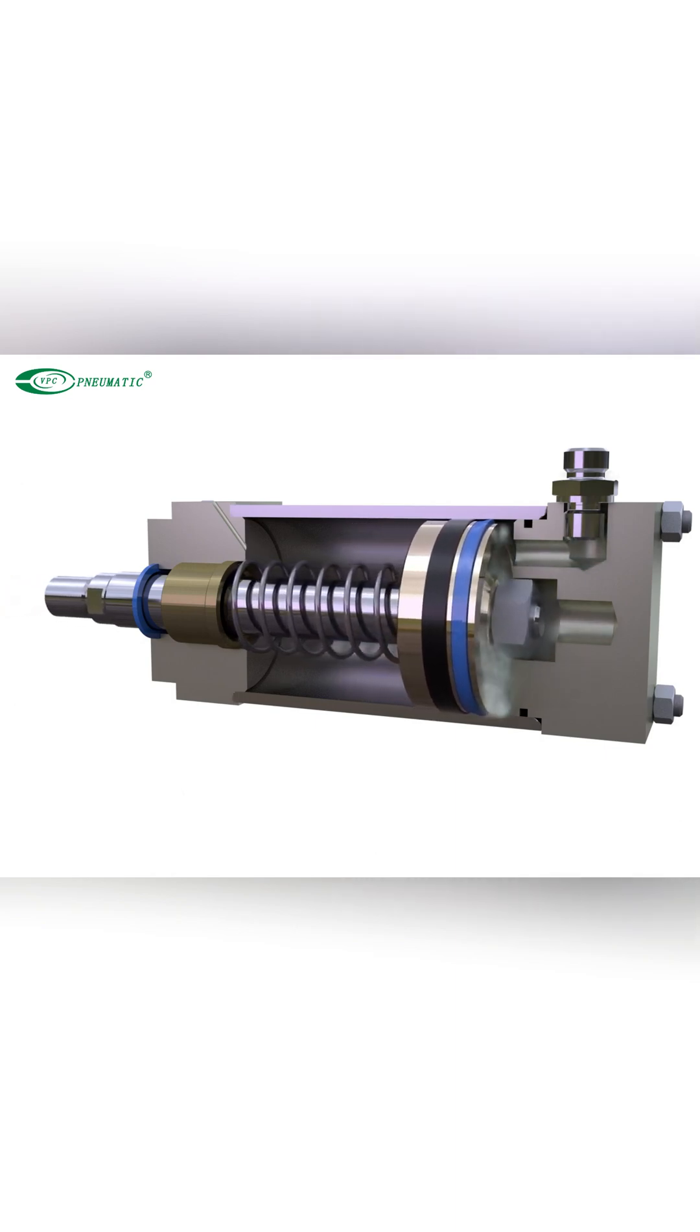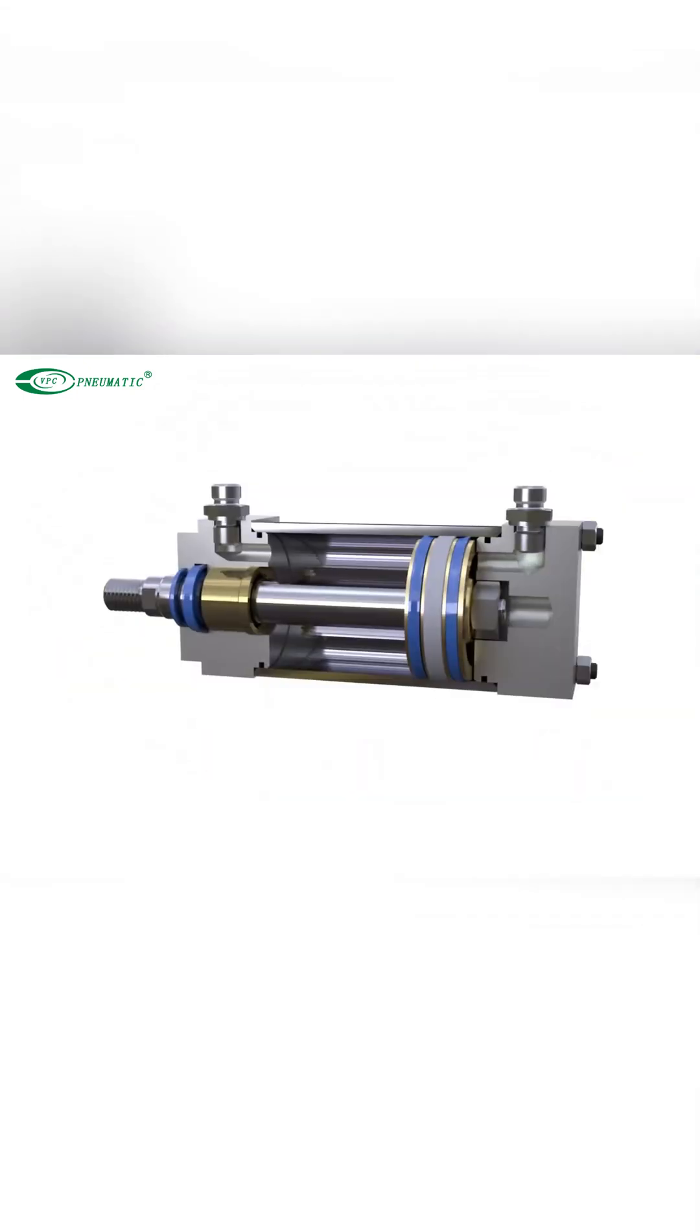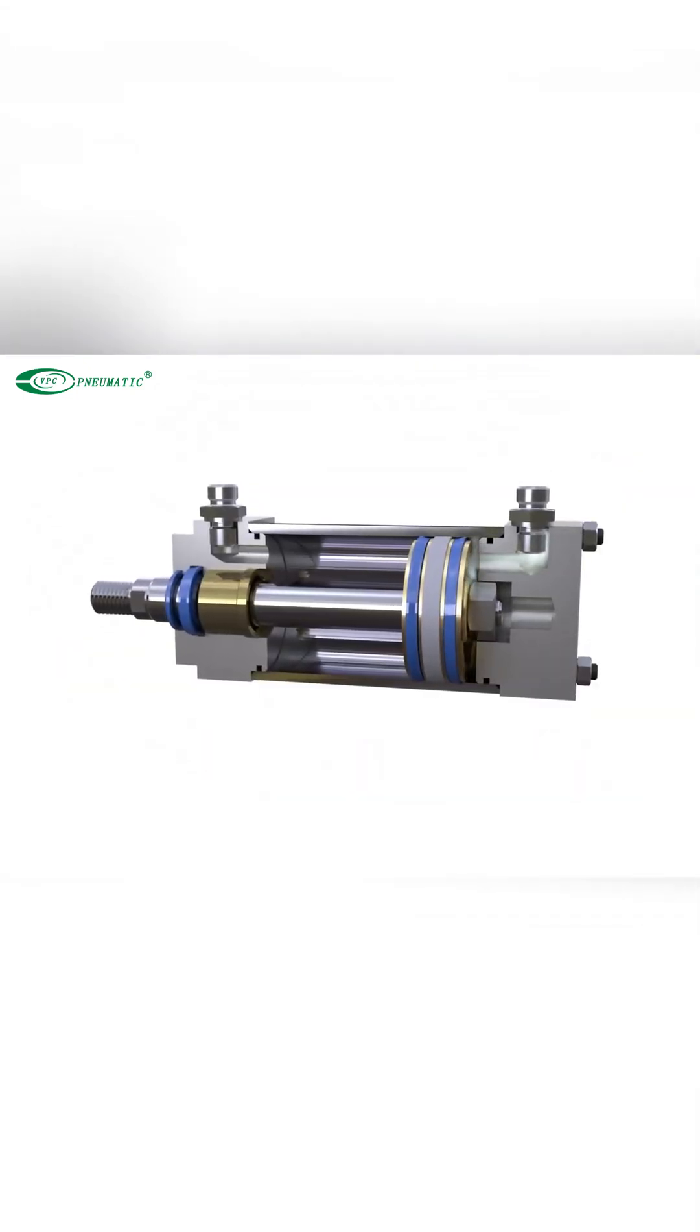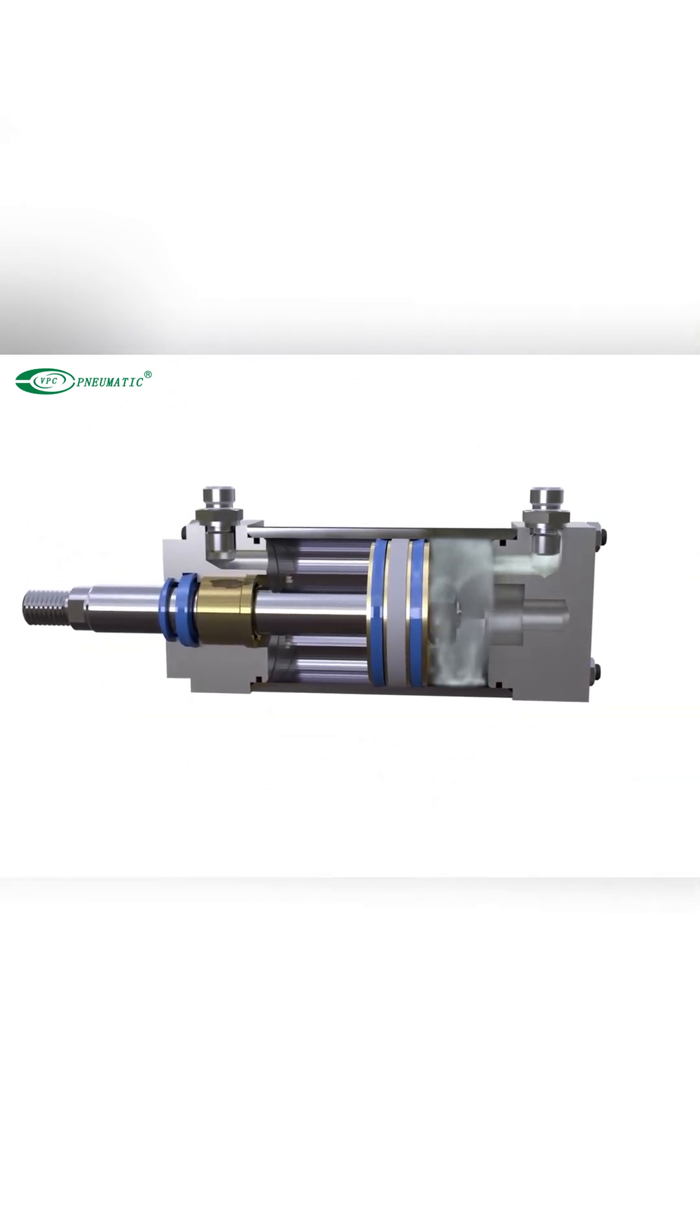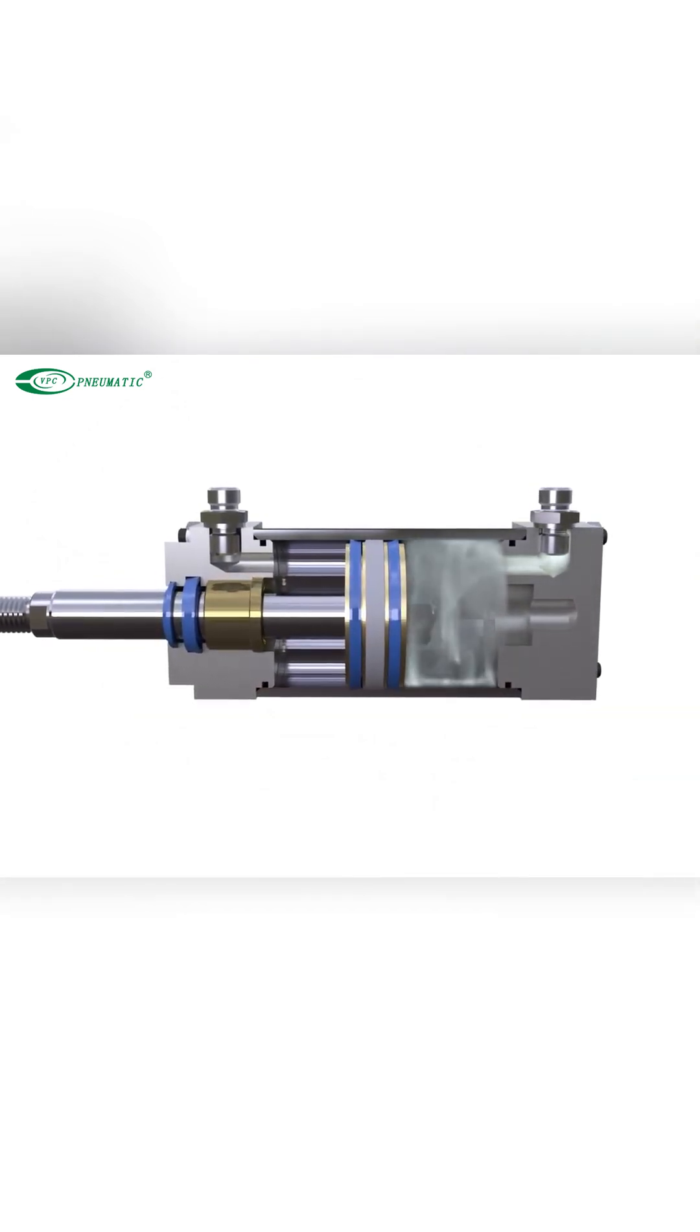Use clean and dry compressed air as working medium in accordance with the corresponding working air pressure. The piping should be fully blown clean to prevent impurities from entering the system, which can cause the cylinder or solenoid valve to malfunction.